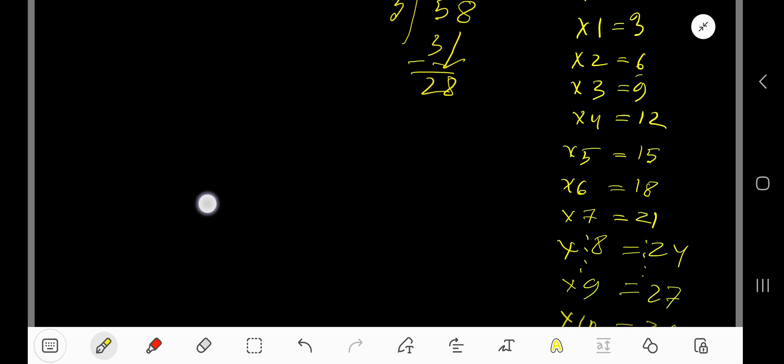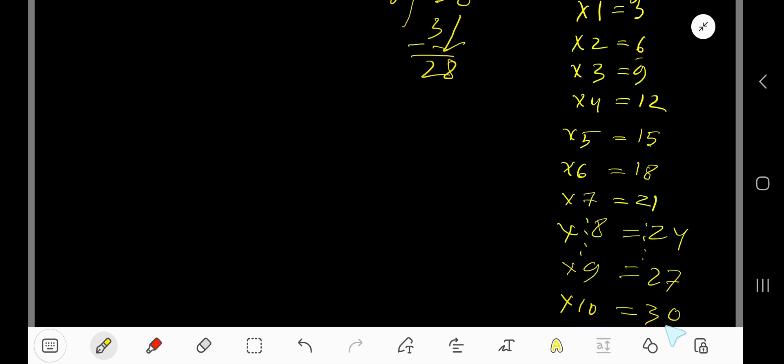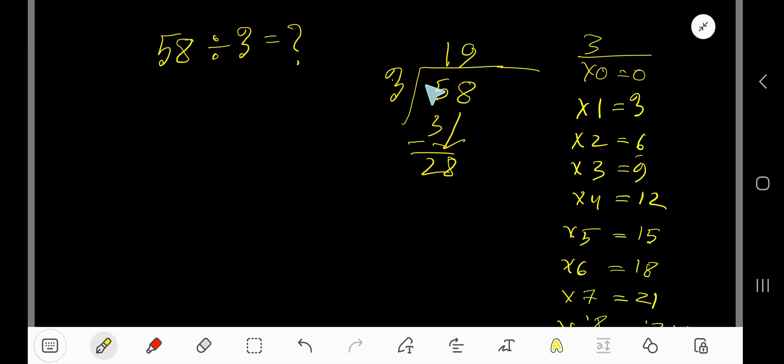Bring down this 8 to make 28. 3 goes into 28 how many times? 10 times 30 which is greater, so 9 times. 9 times 3 is 27. Subtract, you're getting 1. So our answer is 19 remainder 1.